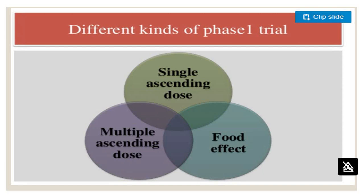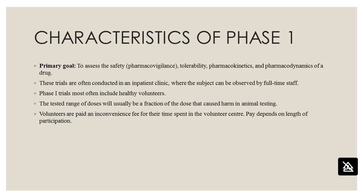Phase 1 includes a single ascending dose, multiple ascending dose and food effects studies. The primary goal is to assess safety, pharmacovigilance, tolerability, pharmacokinetics and pharmacodynamics of a drug. It takes place in an inpatient clinic where subjects are observed by full-time staff. It usually involves healthy volunteers, and the tested range of doses is typically a fraction of the dose that caused harm in animal testing. Volunteers are paid an inconvenience fee for their time, dependent on the length of participation.